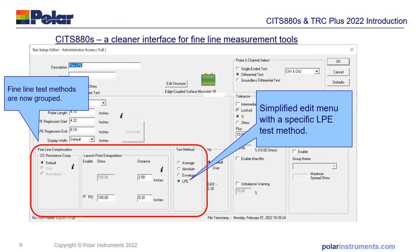In addition, in the SITS 880S we've cleaned up the interface and now have a dedicated section for fine line compensation. There are two methods: one called DC resistance compensation, the other called launch point extrapolation. Both are valid methods for removing DC resistance effects on the trace. Some OEMs prefer to specify a DC resistance per inch; others prefer launch point extrapolation. When you specify LPE, the resistance spec is drawn from the main specification in the SITS, so you don't have multiple impedances to deal with as in previous versions.